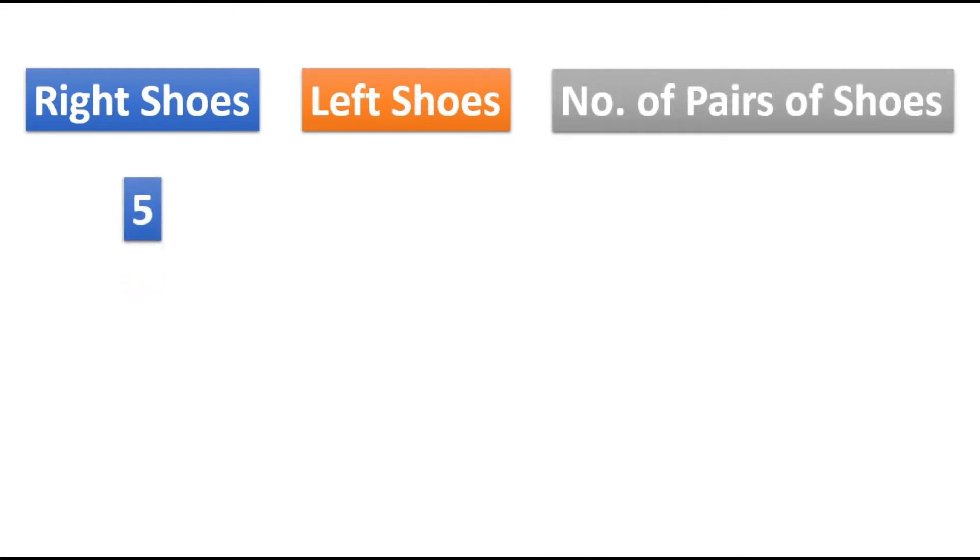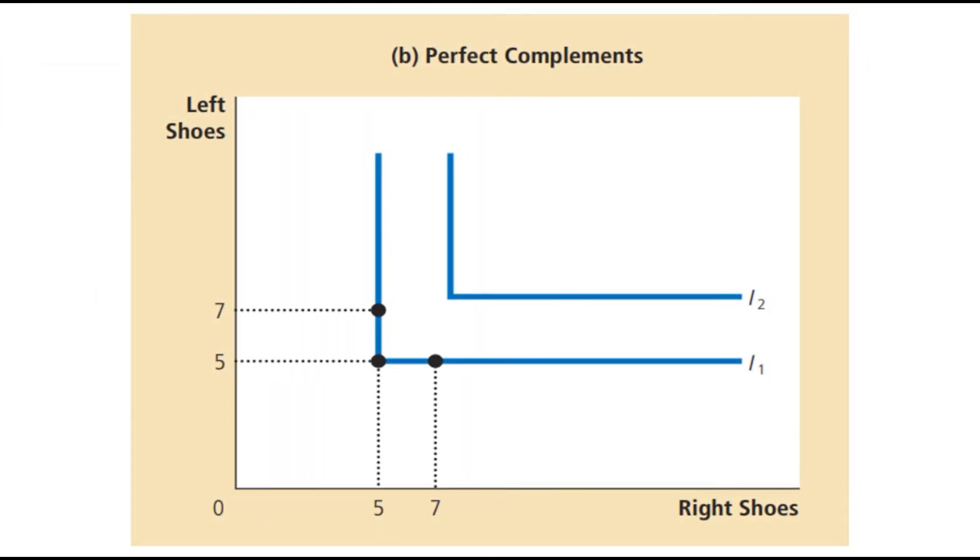So if you have five right shoes and five left shoes, you will get five pairs of shoes. Now if you have five right shoes but seven left shoes, again in this case you will get five pairs of shoes. And if you have seven right shoes but five left shoes, again you will have five pairs of shoes.